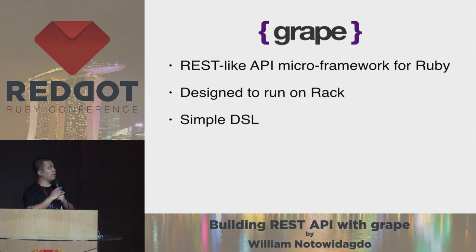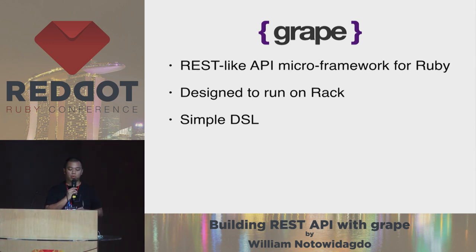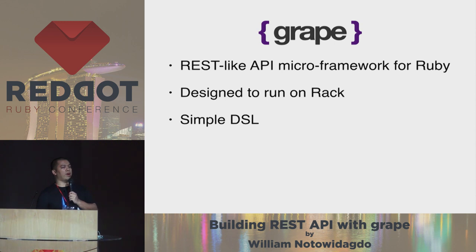So what is GRIB? GRIB is a REST-like API micro framework for Ruby. It is designed to run on Rack and it provides a simple DSL.